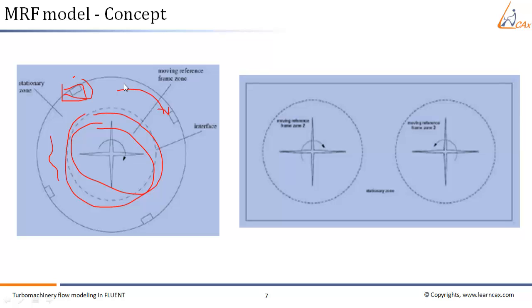In the second case shown, we have more than one moving reference frame — there are two impellers. The geometry contains two rotating impellers side by side, and this problem needs to be modeled using three reference frames: the stationary frame outside the impellers, and two separate moving reference frames surrounding each of the two impellers.